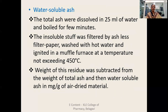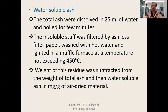For the water soluble ash: after obtaining the total ash, the same ash is dissolved in 25 ml of water and boiled for a few minutes. The insoluble residue is filtered through ashless filter paper, washed with hot water, and ignited in a muffle furnace at a temperature not exceeding 450 degrees centigrade. The weight of this residue is subtracted from the weight of the total ash to obtain the water soluble ash in milligrams per gram of air-dried material.